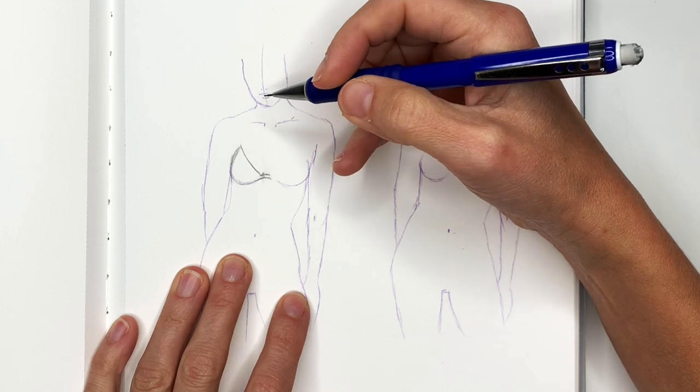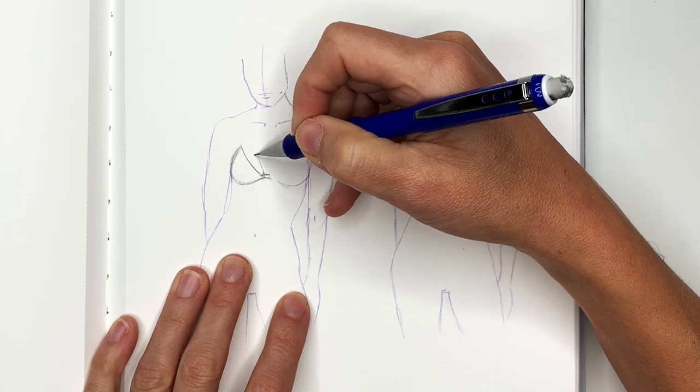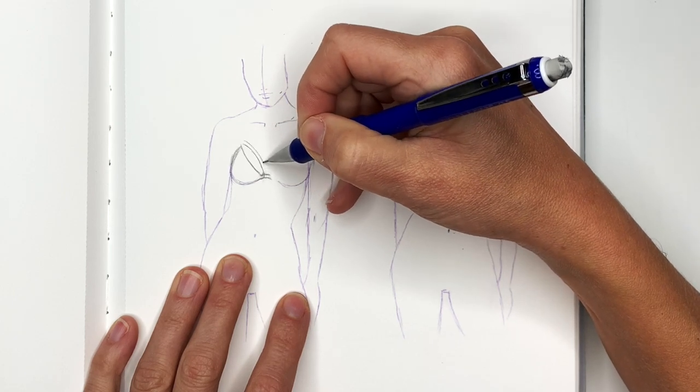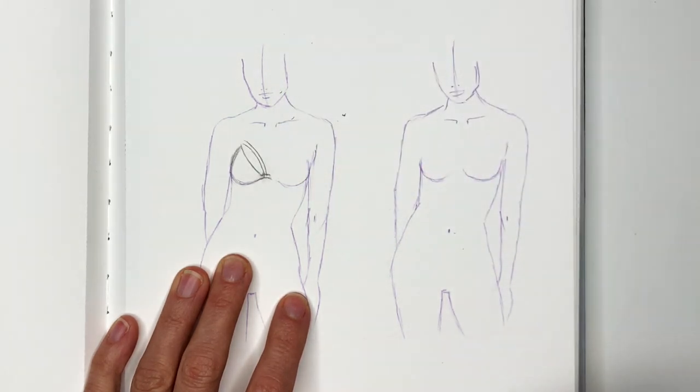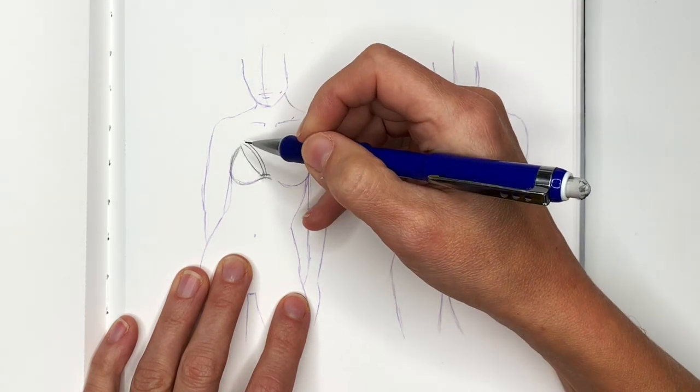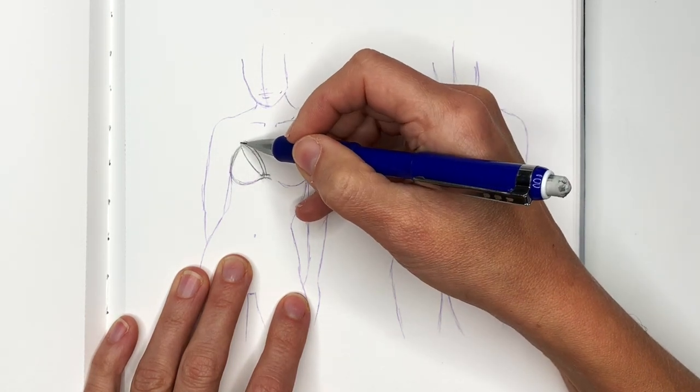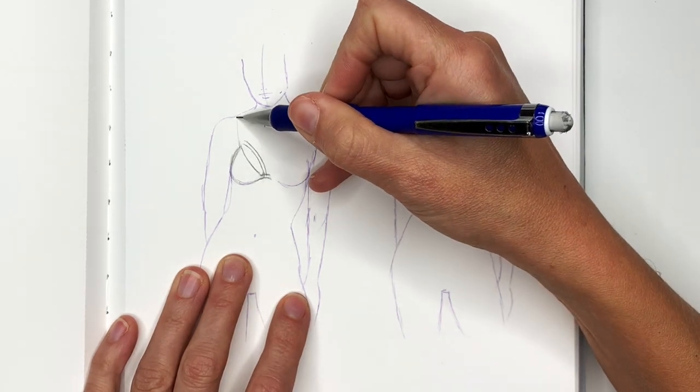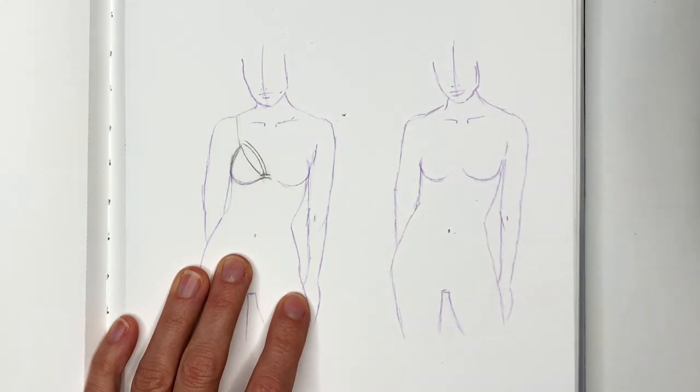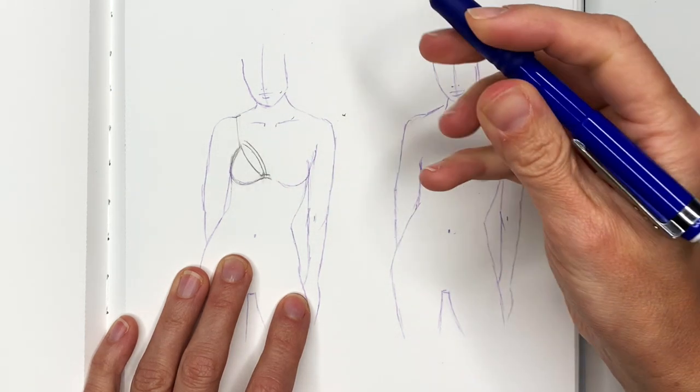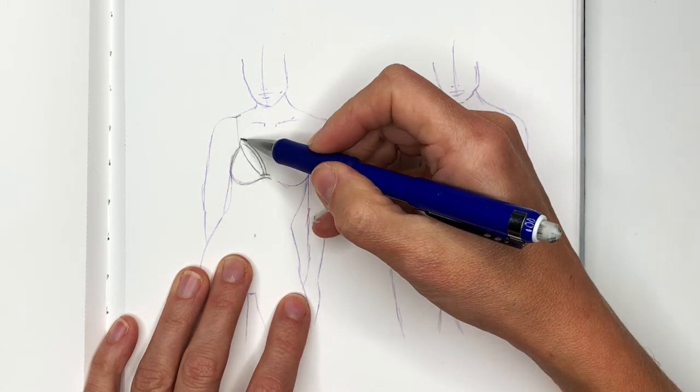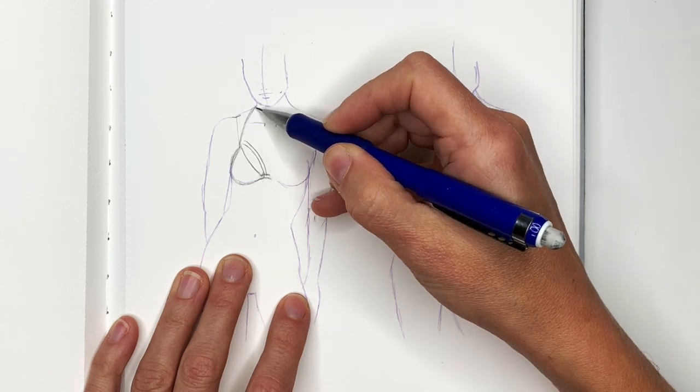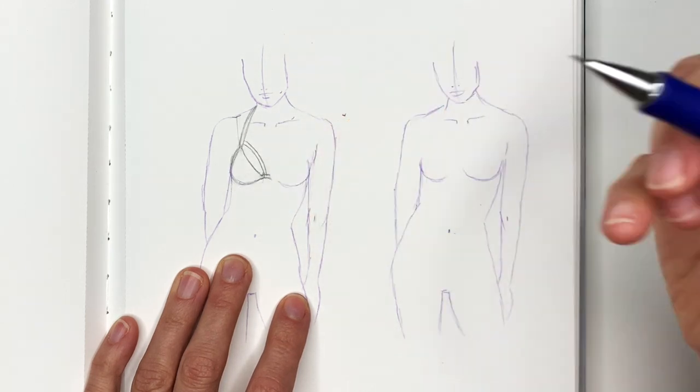I want my bikini to be strappy, so I'm going to add straps here like this. Your shoulder straps can either go straight up, so you will draw them like this with a little indentation here, or if it's going behind the neck, you're going to draw them so they disappear behind the neck.